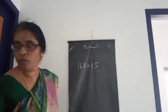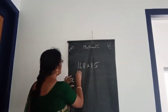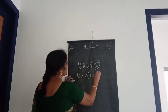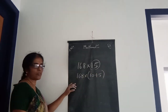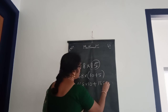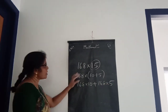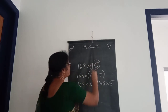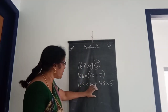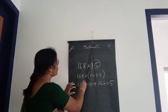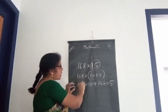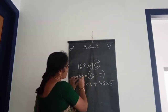Here is another method. 168 into 15 — you can split it. This 15 you can split as 10 plus 5. That means 168 into 10 plus 168 into 5. You distribute 168 over each number in the bracket — multiply with 10 and multiply with 5.